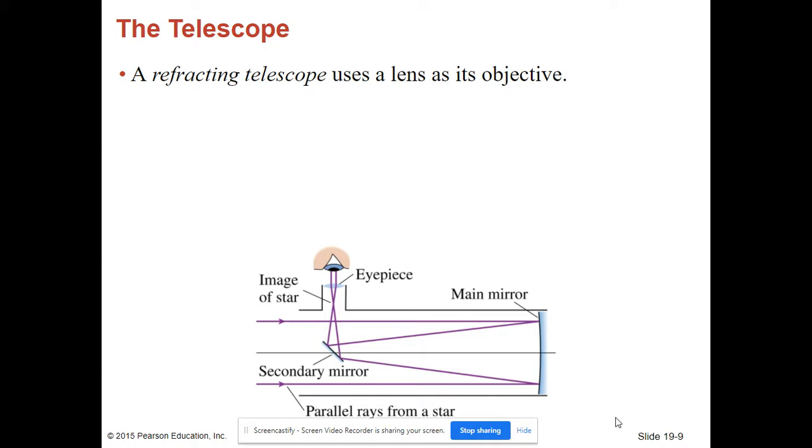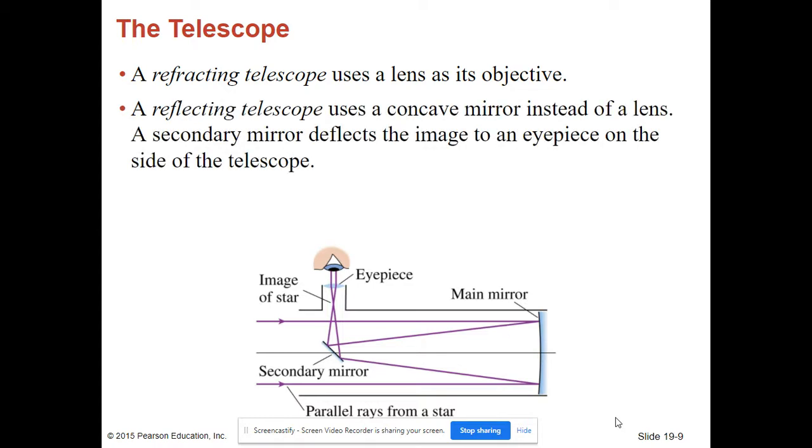A refracting telescope uses a lens as its objective. A reflecting telescope uses a concave mirror instead of a lens. A secondary mirror deflects the image to an eyepiece on the side of the telescope.